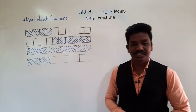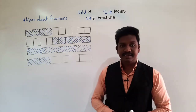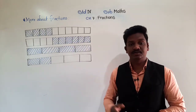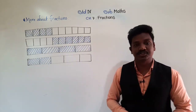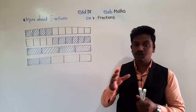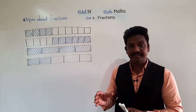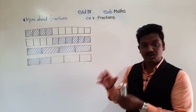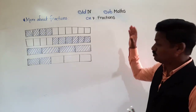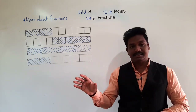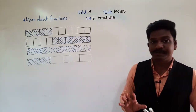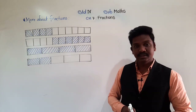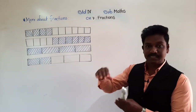Hello, my dear students, welcome to today's video lecture of Maths. Yesterday we started our new chapter, chapter number 7, Fractions. In yesterday's lecture we learnt about the concept of fractions. Fractions means the part of a whole. A fraction is related to the parts of a whole, and the parts should be equal. When any object or figure is divided into equal parts, we can express the shaded or unshaded parts in the form of a fraction. Equal parts — this is the main principle of fractions.